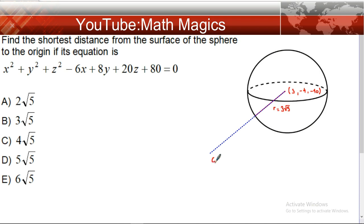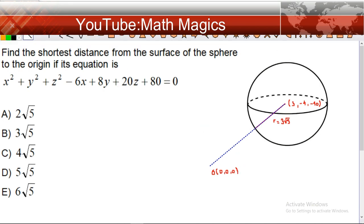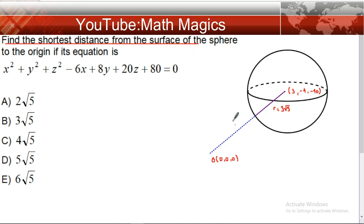The origin is (0, 0, 0), and we need to find the shortest distance from the surface of the sphere to the origin. It must be that dotted line, and if we call it k, we need to find k.